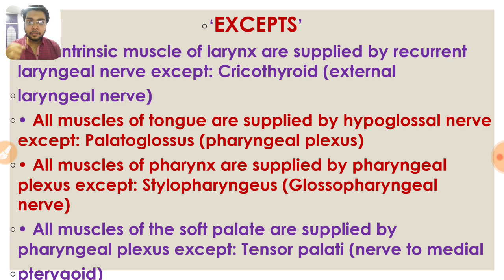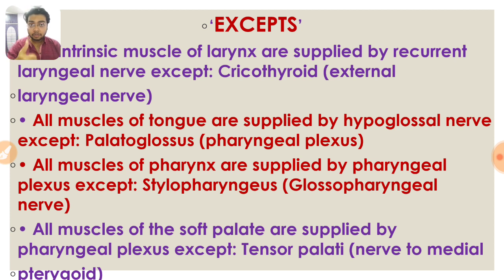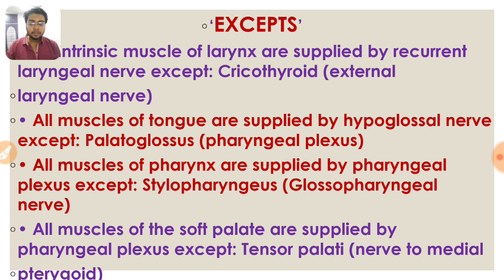The pharyngeal plexus supplies all muscles of the pharynx except one — stylopharyngeus, which is supplied by the glossopharyngeal nerve. All muscles of the soft palate are supplied by the pharyngeal plexus except the tensor veli palatini, which is supplied by the nerve to medial pterygoid. Lots of MCQs will come from this confusing portion.